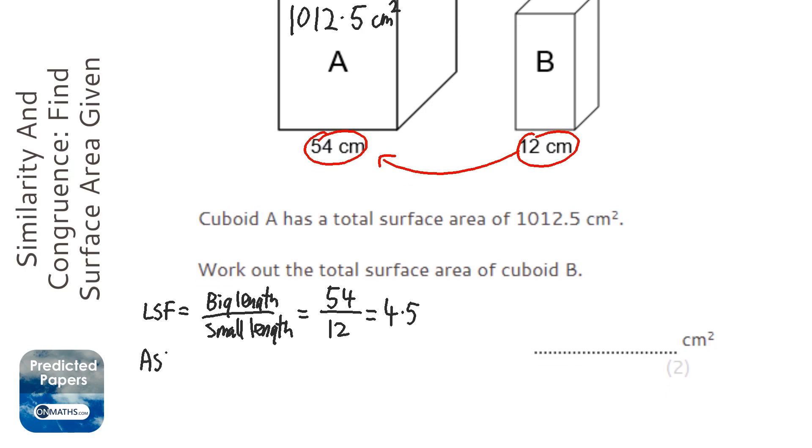But the area scale factor is the linear scale factor squared, so it's 4.5 squared. 4.5 squared is 20.25.